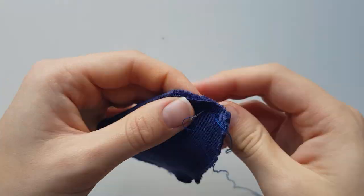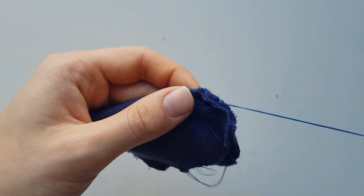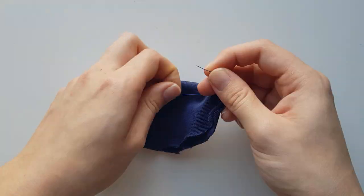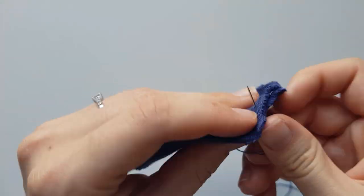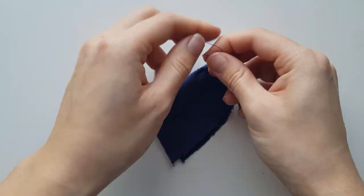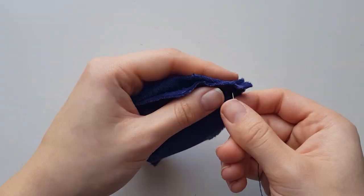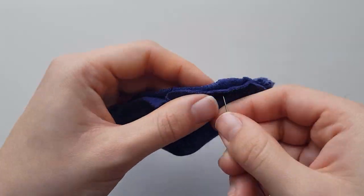The first thing you need to do is sew up both darts on each headpiece. Place both headpieces together tracing side up and sew them together around the curve leaving the straight edge open.